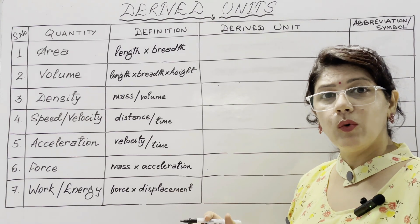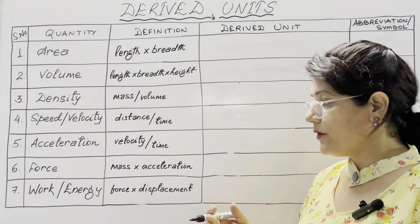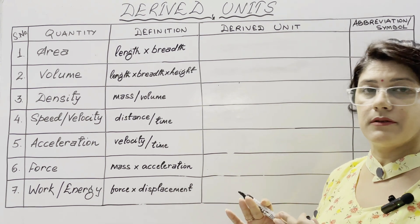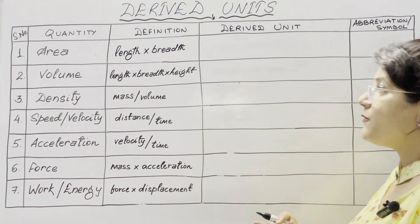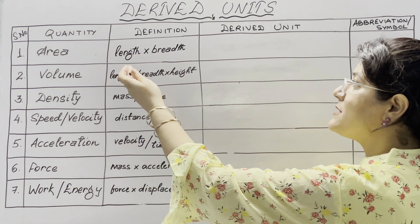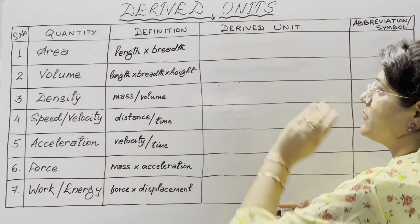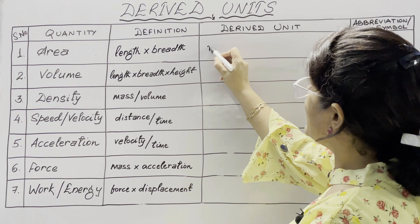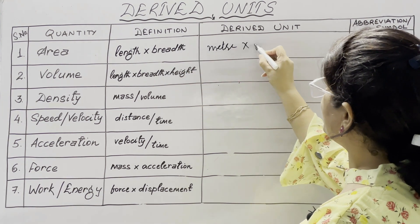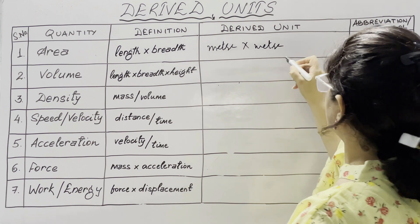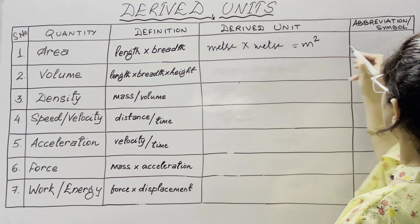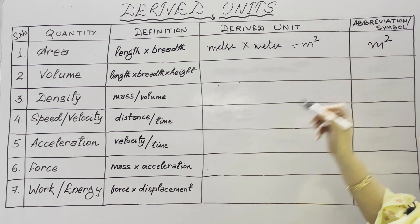Derived units are those which depend on the fundamental units and which can be expressed in terms of fundamental units. Starting with the simplest one, which is area — its definition is it is a product of length and breadth. We know the unit of length is meter and the unit of breadth is also meter, so its SI unit is meter square.